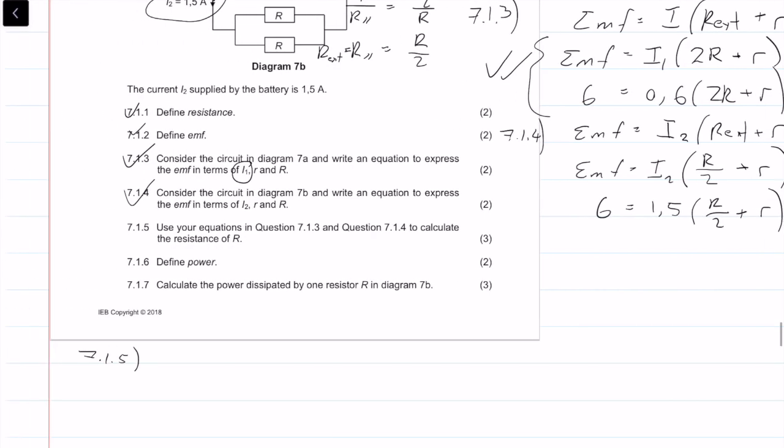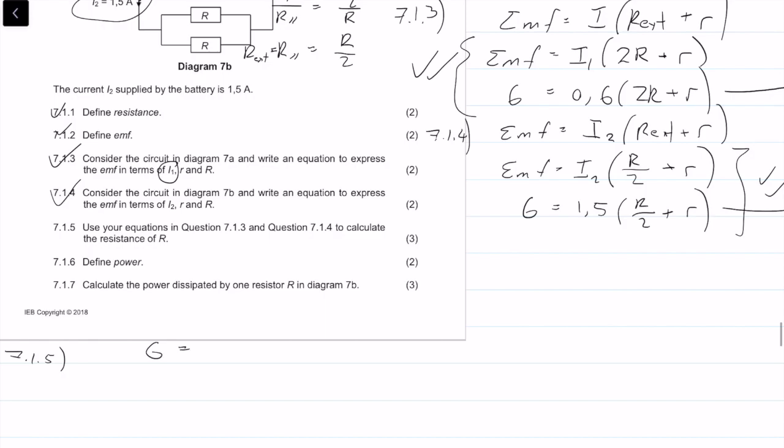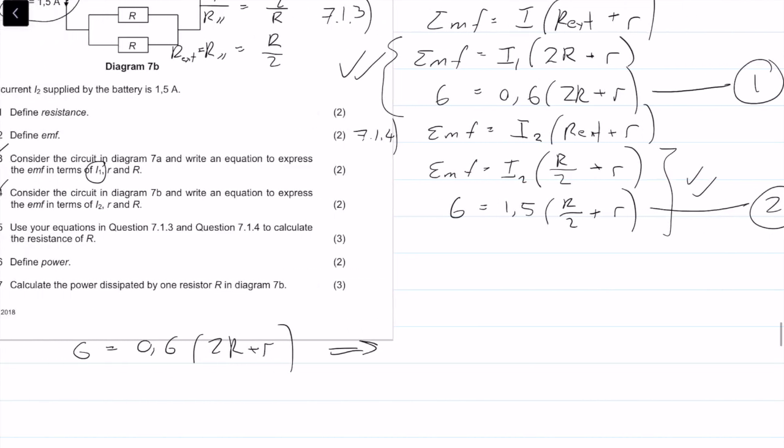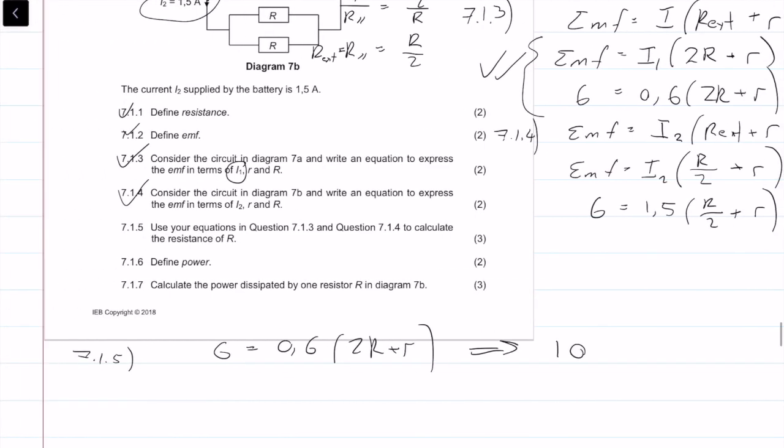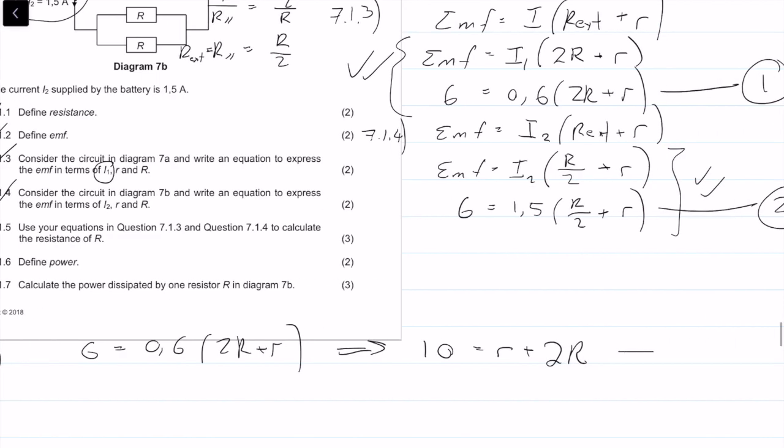If we look at equation 1, we're working with 6 equals 0.6 times (2R plus r). This can be converted, dividing by 0.6, we get 10 equals r plus 2R, and that I am going to say is equation 3.